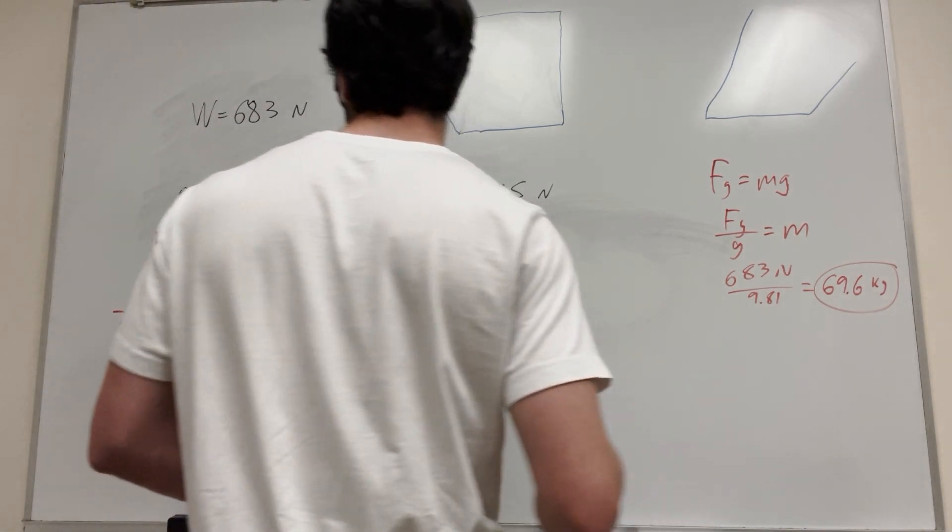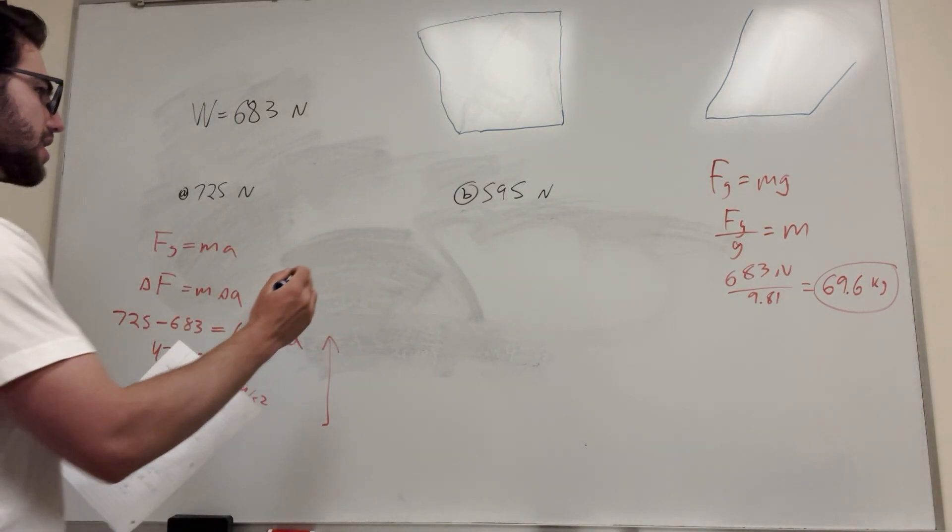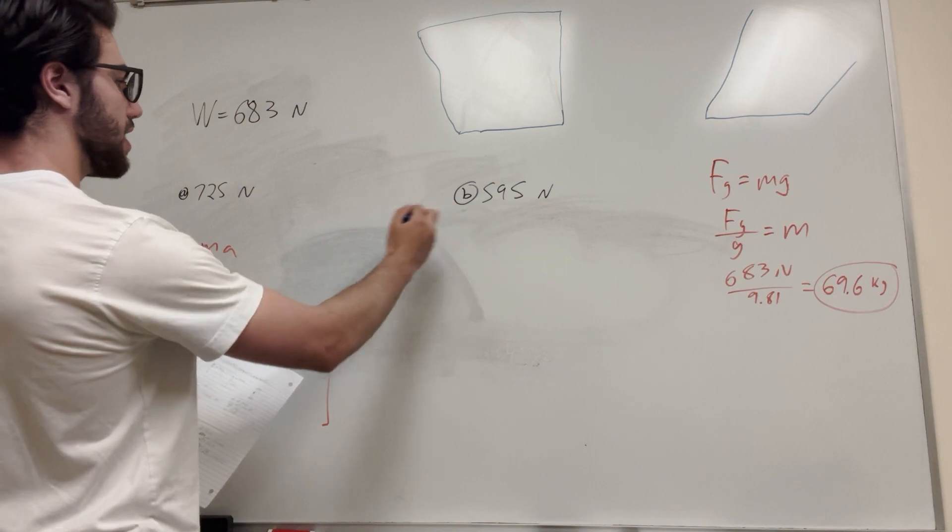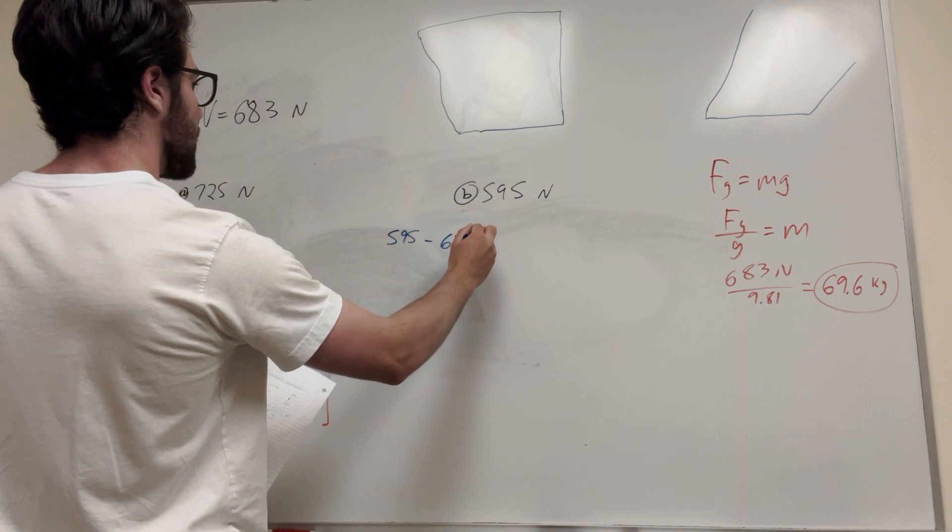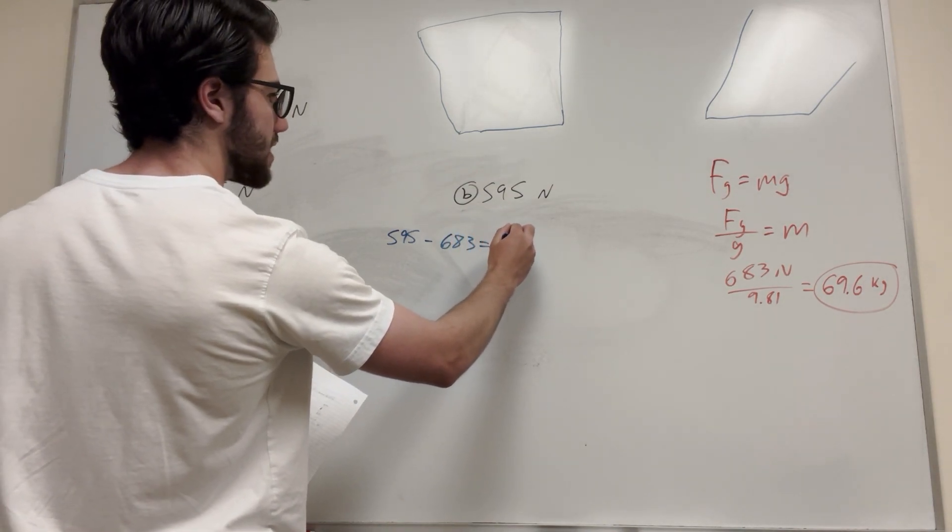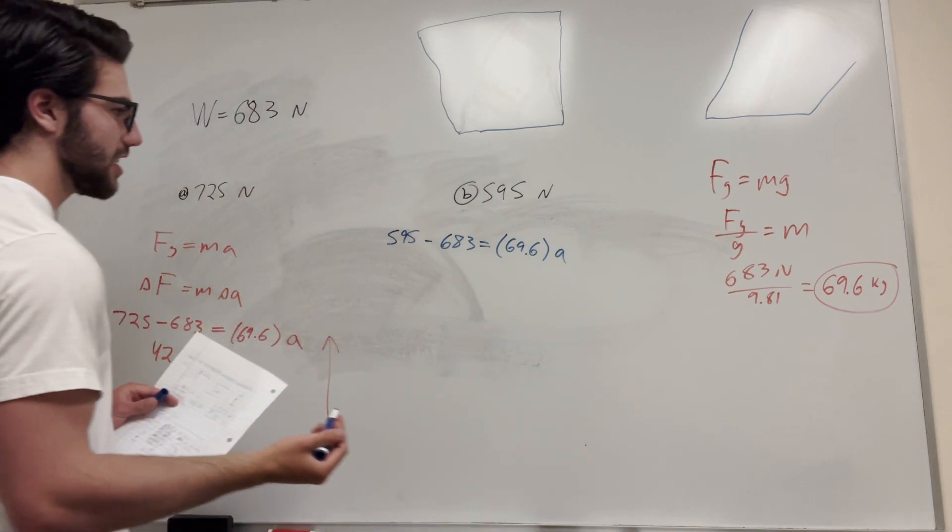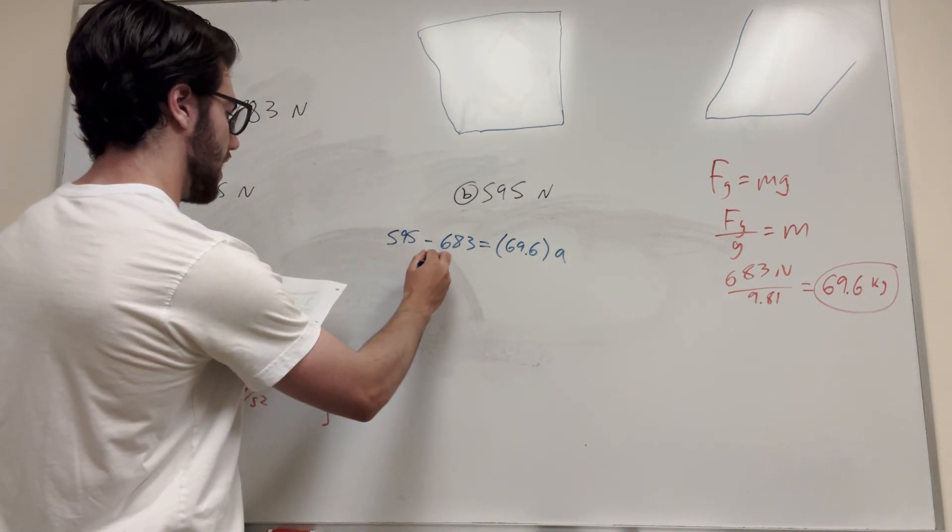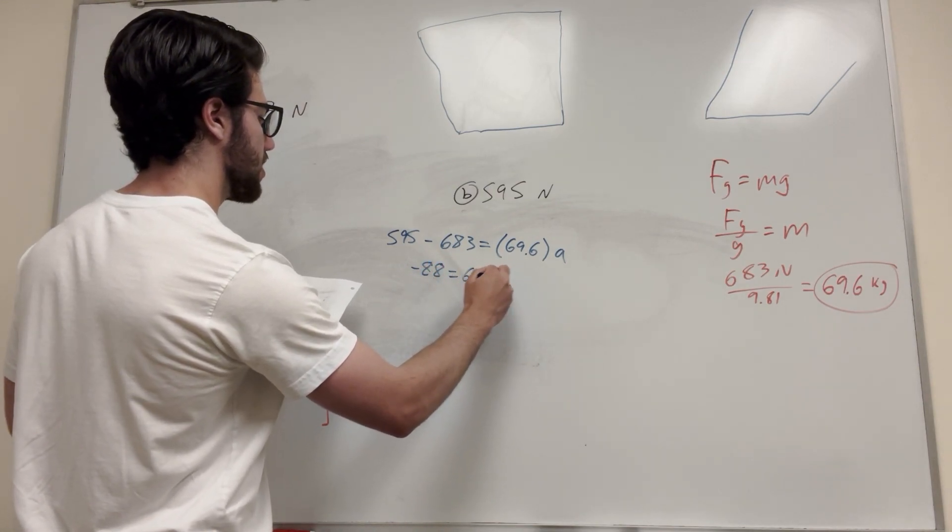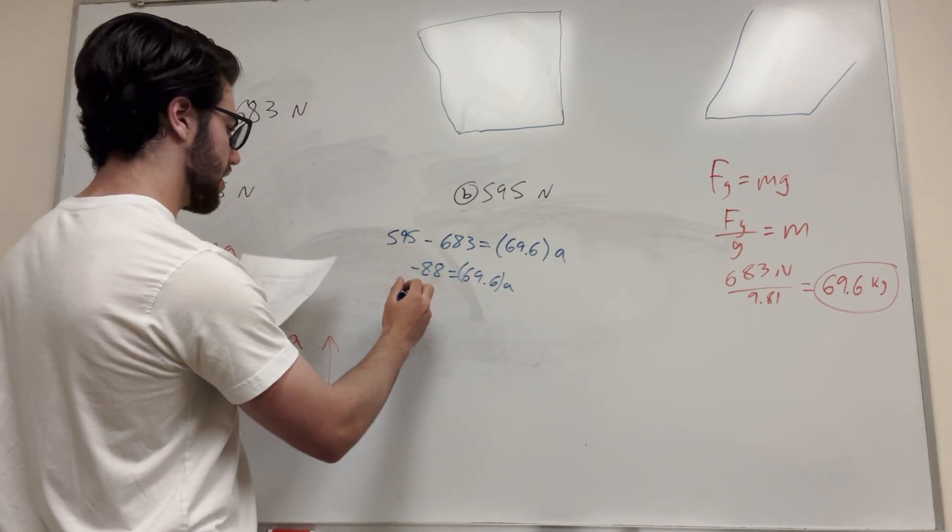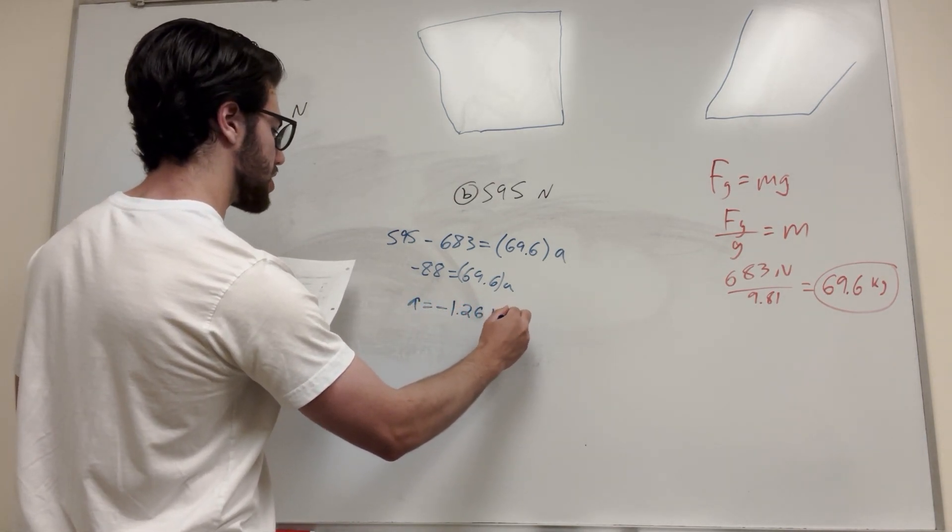So part B, we're going to do the same thing. I think that's all it needs. Yeah, so part B, same thing. Force equals mass times acceleration. So we're going to take, this time, 595 minus 683, and that's equal to the same thing, mass 69.6, but this time it's another acceleration. So if you do this, you're going to get negative 88 equals 69.6 acceleration. Divide over and you're going to get acceleration equals negative 1.26 meters per second squared.